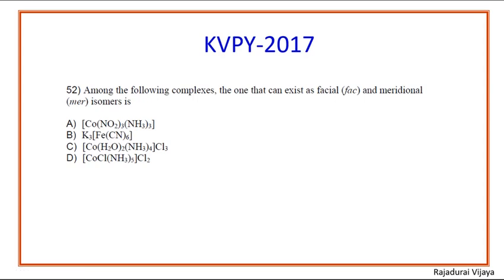Hello viewers, in this video we are going to see a KVPY question which was asked in 2017. The question belongs to coordination chemistry. The question is: among the following complexes, the one that can exist as facial and meridional isomer is — before going to the answer, we see which type of complexes can have facial and meridional isomers.